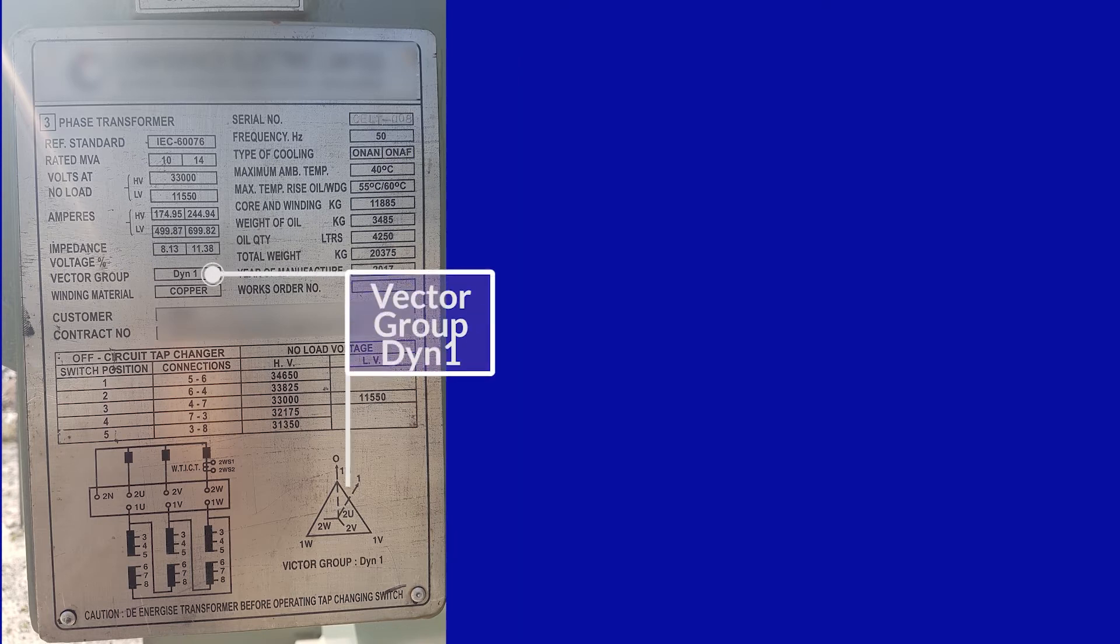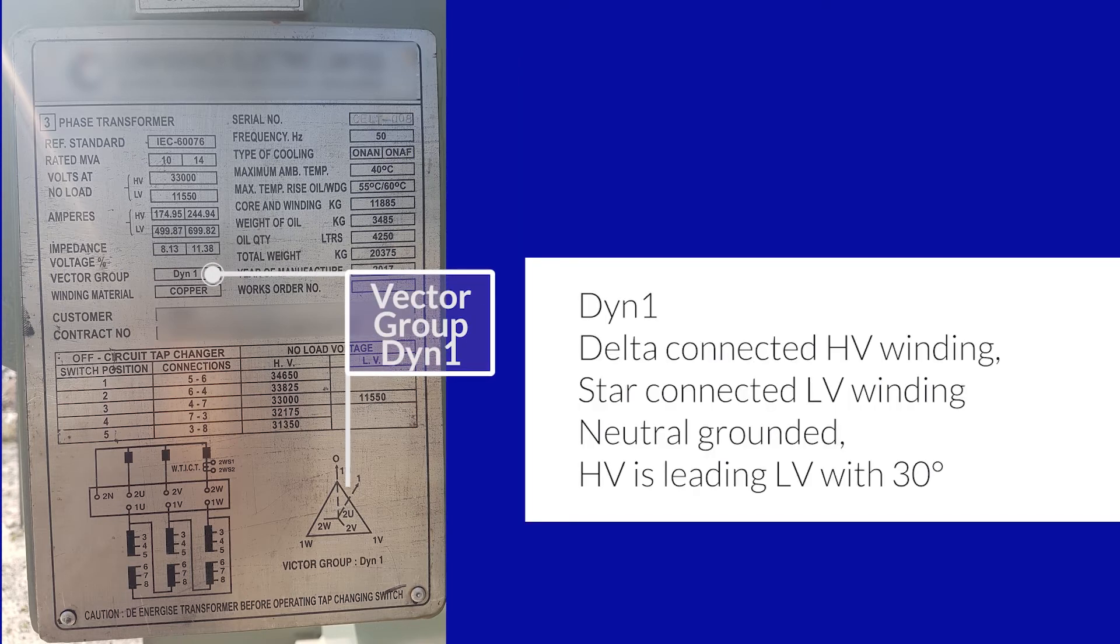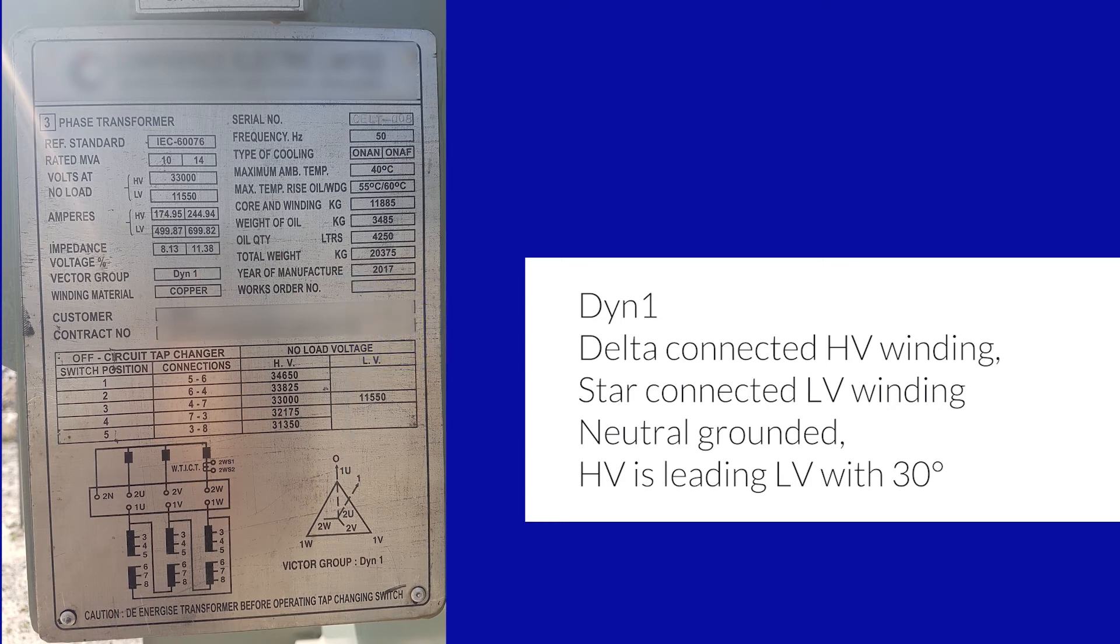Now, the vector group. The vector group of this transformer is DYN1. It means delta-connected HV winding, star-connected LV winding, neutral is grounded, and HV is leading LV side with 30 degrees.